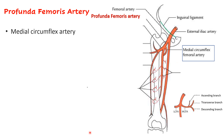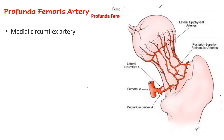The medial circumflex femoral artery gives three branches: ascending, transverse, and descending. The ascending and transverse branches participate in the anastomosis present at the upper part of the back of the thigh, which we will consider later. The ascending branch also has another important role to consider.